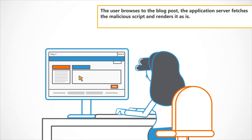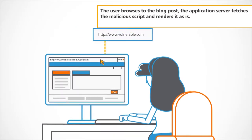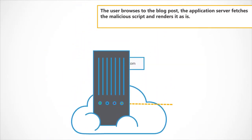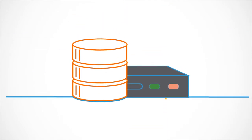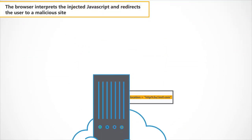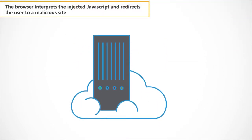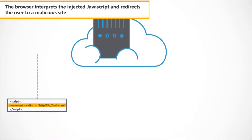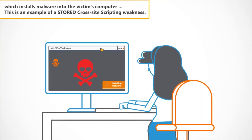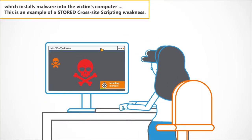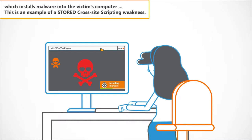The user browses to the blog post. The application server fetches the malicious script and renders it as-is. The browser interprets the injected JavaScript and redirects the user to a malicious site, which installs malware into the victim's computer. This is an example of a stored cross-site scripting weakness.